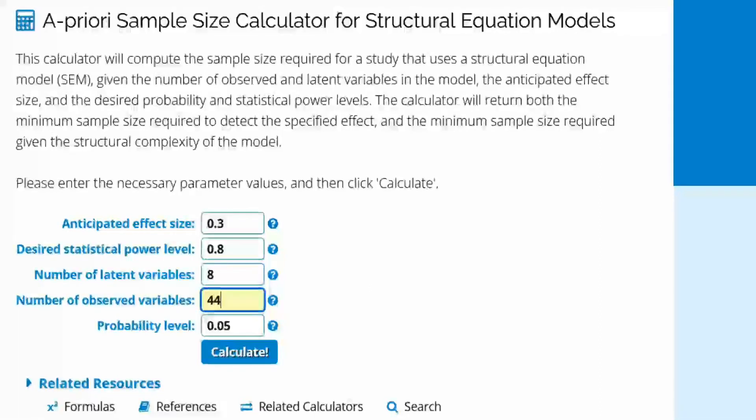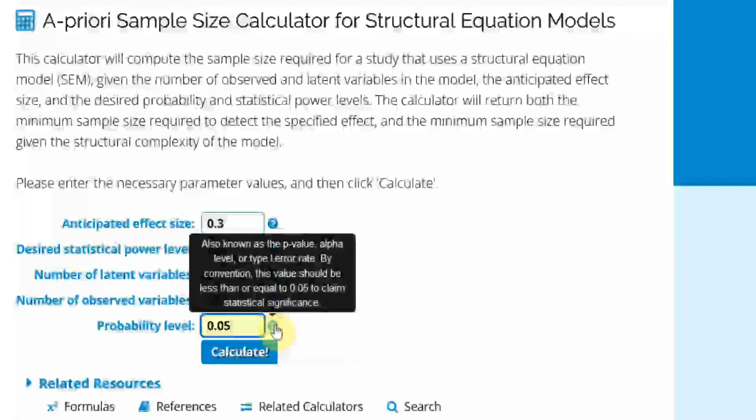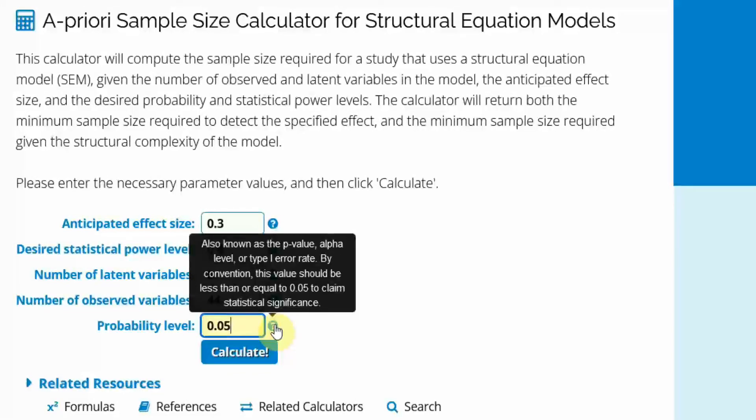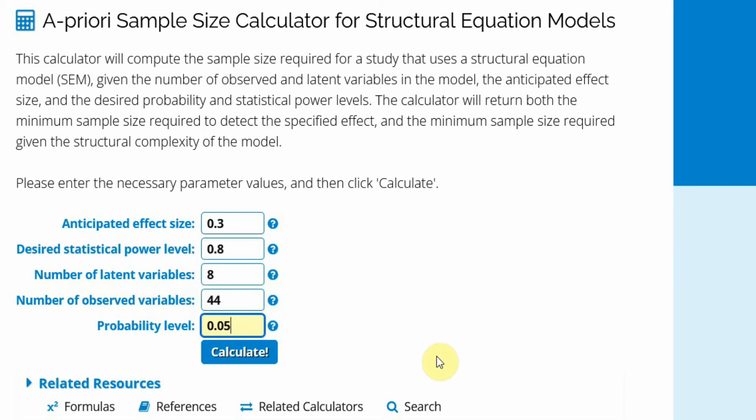Probability level. Well actually also known as p-value, alpha level or type 1 error rate. By convention, this value should be less than 0.05 in order for you to accept your hypothesis and this is what we do in social sciences research. Nothing else is required. Just press calculate.